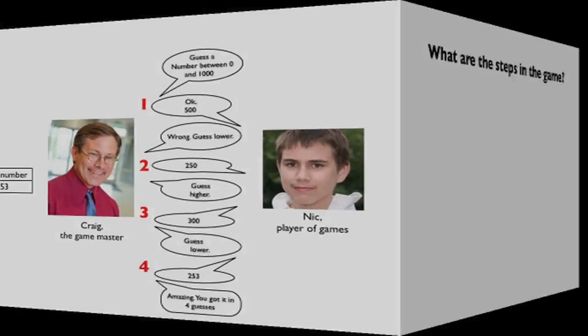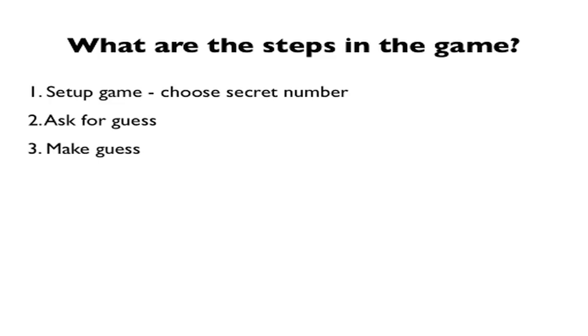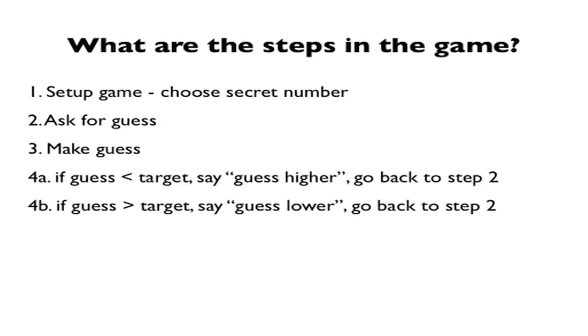So what are the steps in playing the game? First, set up the game and choose a secret number. Then ask for a guess. The user will make a guess. Then, if the guess is less than the target, say guess higher, go back to step two. Basically, you can see we're making a decision and then we go to repeat something depending on the value of the decision. Or B, if the guess is greater than the target, we say something slightly different, then we still go back to step two.